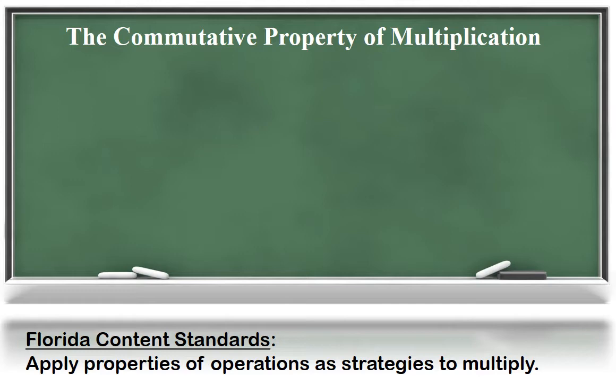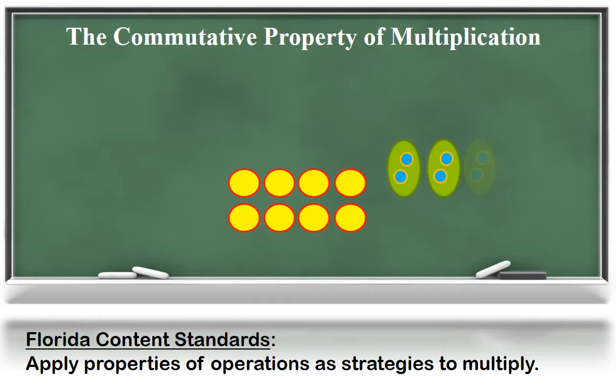As you can see in the array, four groups of two, or four times two—all I'm doing is rotating the array to show two groups of four. I didn't add or remove circles, so the product is the same. I can also show the commutative property with equal groups. First I have four groups of two. When I create two groups of four, I have the same amount of circles: eight.